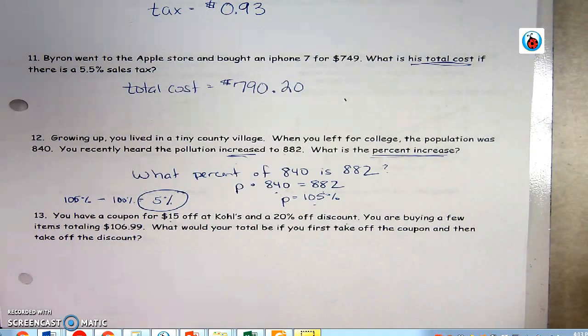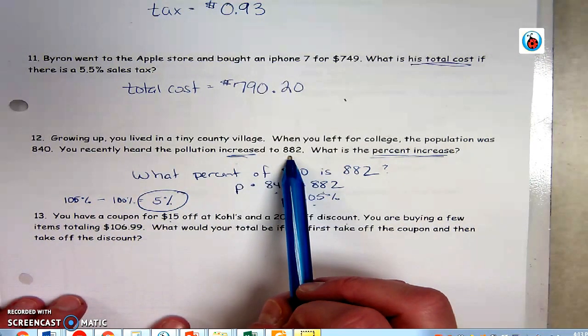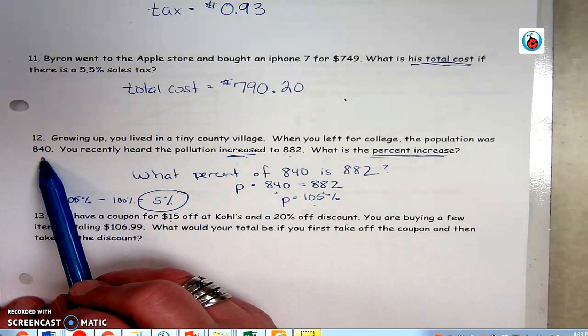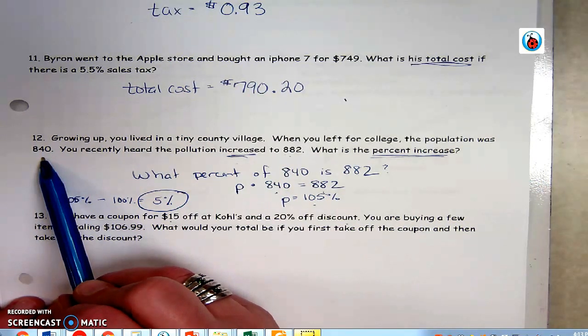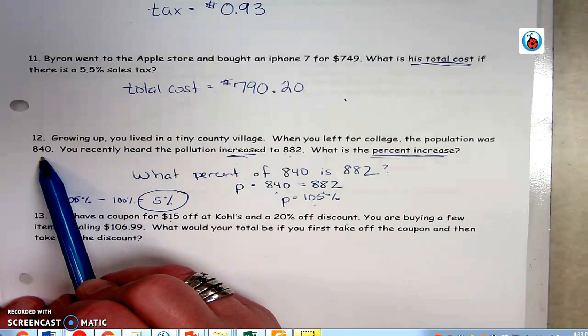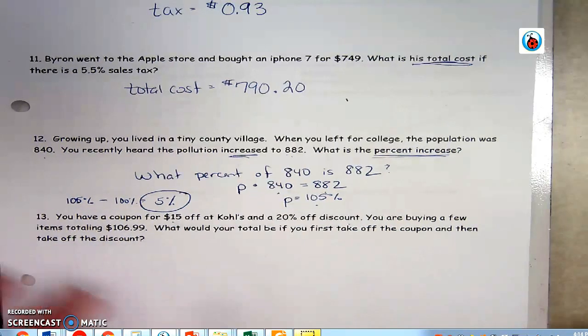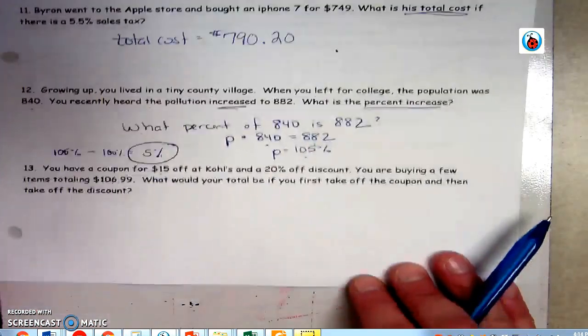The other way to do it would be to find the increase, do 882 minus 840, and then divide by the total to get the percent, and that would work too. All right, on to number 13.